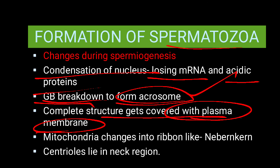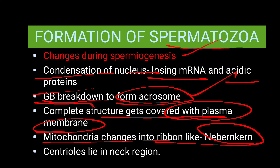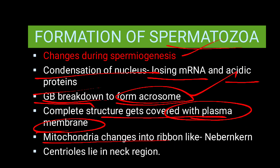The cytoplasm that remains moves into the tail region. Mitochondria change into a ribbon-like structure called the nebenkern — learn the spelling: nebenkern. The centrioles lie in the neck region — there will be two centrioles in the neck region. Let's see the diagram for this structure.